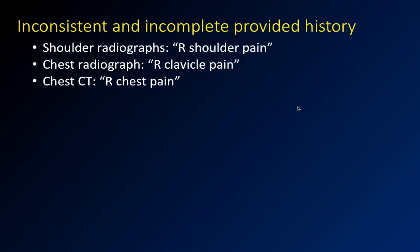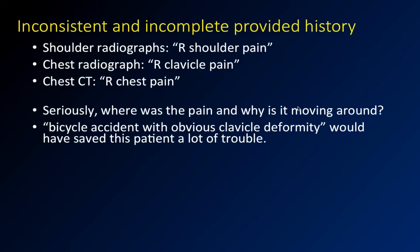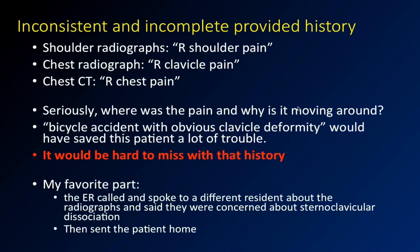How did this happen? The history was all over the place: shoulder pain, clavicle pain, chest pain. The real story was a bicycle accident with an obvious clavicle deformity. If I had known about the obvious deformity, I would have stared at that clavicle until I found what was going on. Instead I was just reading it like another chest study — a PE or whatever — and I made a mistake. Having the right history would have really helped.